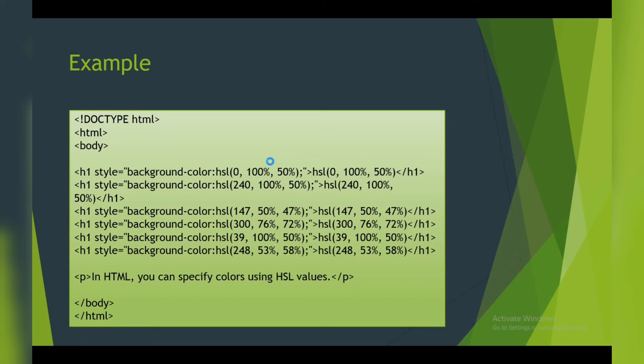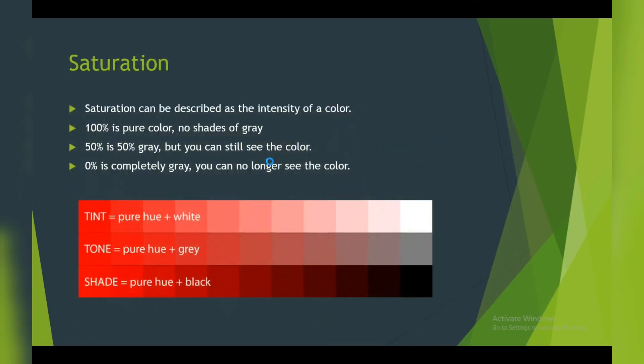Wait for my notepad explanation. In HTML, you can specify colors using HSL values also. Let's learn more detail about saturation. It can be described as the intensity of a color. 100 is pure color with no shades of gray. 50 is 50 percent, where you can still see the color. Zero percent is complete gray where you can no longer see the color.